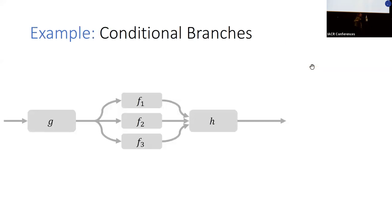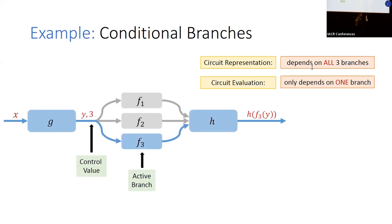Indeed, there are examples of functions that do not have an efficient circuit representation — for example, conditional branches. In conditional branches, evaluating such a function only depends on one of the branches. However, the circuit representation typically needs to encode a description of all of the branches, and as a result naively running an MPC protocol for computing such a function would result in communication dependent on the size of all of the branches.